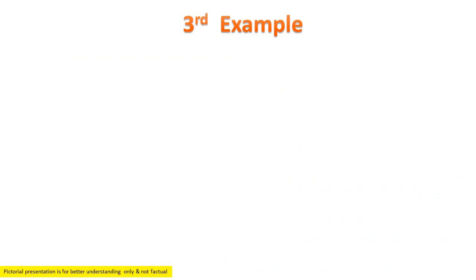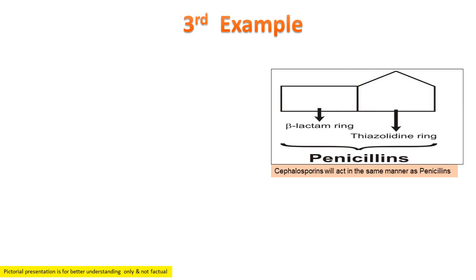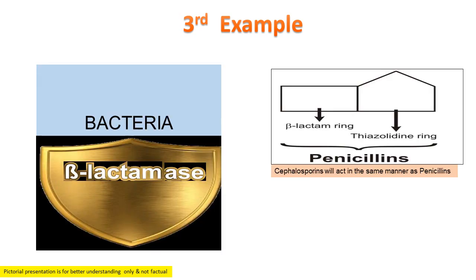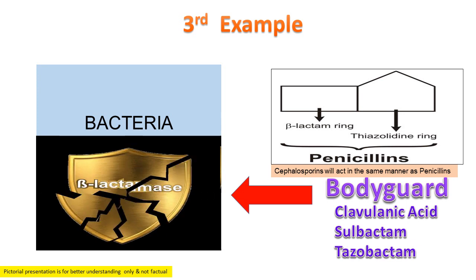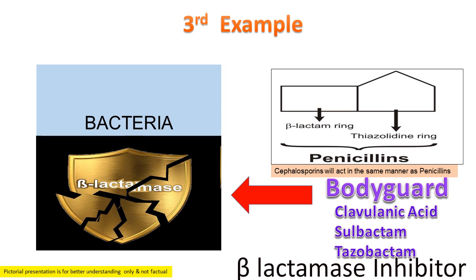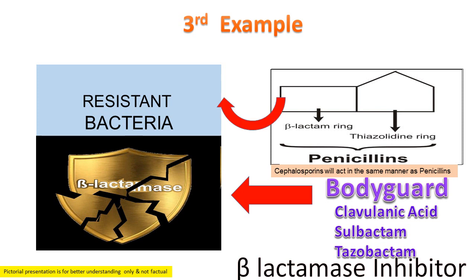Consider the third example. Penicillin is a very good antibiotic but is destroyed in the presence of beta-lactamase enzyme. Therefore, to protect penicillin, we will send a bodyguard along with it. An example of a bodyguard is clavulanic acid. The bodyguard inhibits the beta-lactamase enzyme, so the mode of action of clavulanic acid is as a beta-lactamase inhibitor. With the beta-lactamase inhibited, the beta-lactam ring in penicillins can destroy the resistant bacteria. Other examples of beta-lactamase inhibitors are sulbactam and tazobactam.